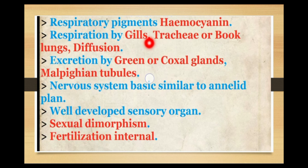Respiration in arthropods takes place by gills, trachea, book lungs, or diffusion. Some animals respire through gills, some through trachea, and others through book lungs — which are lamellar lung structures.